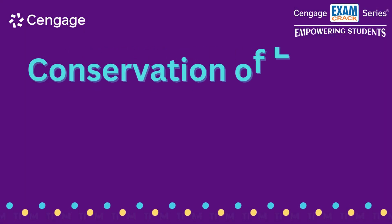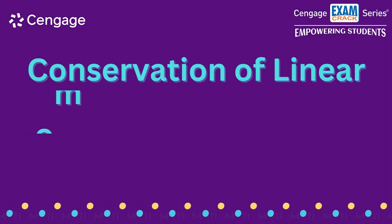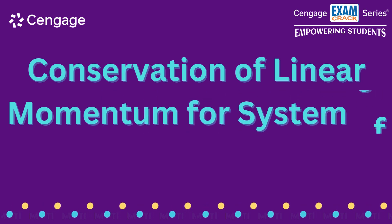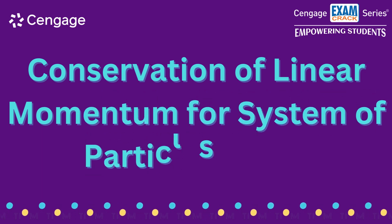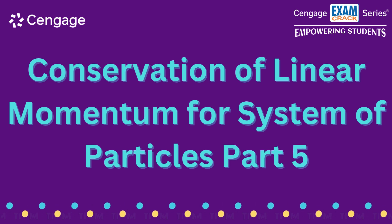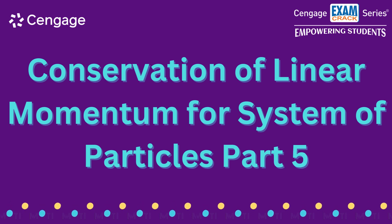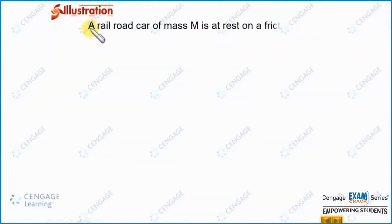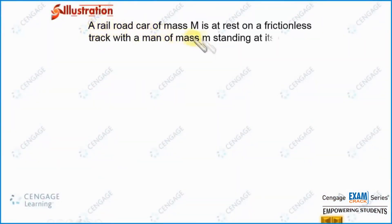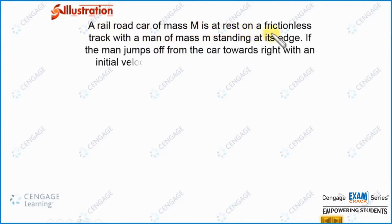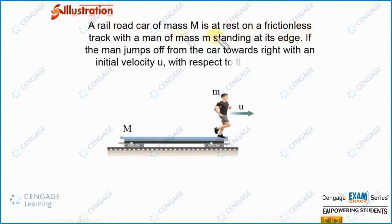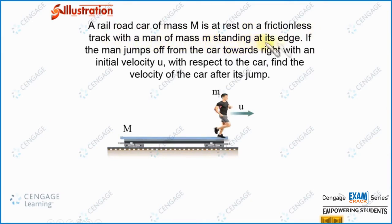Dear students, in this section we are going to discuss one very important concept of mechanics: conservation of linear momentum for a system of particles. In this illustration, a railroad car of mass capital M is at rest on a frictionless track, with a man of mass small m standing at its edge.